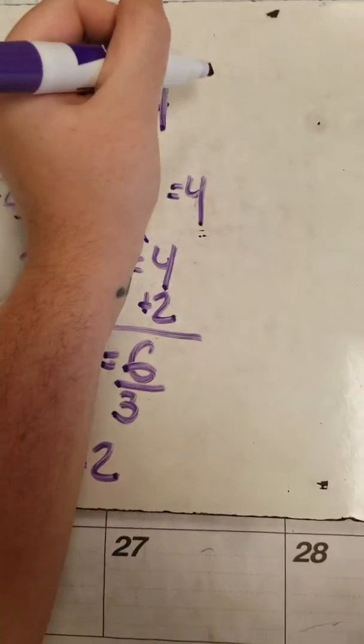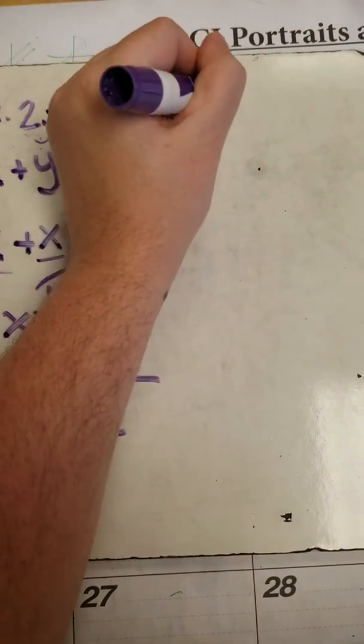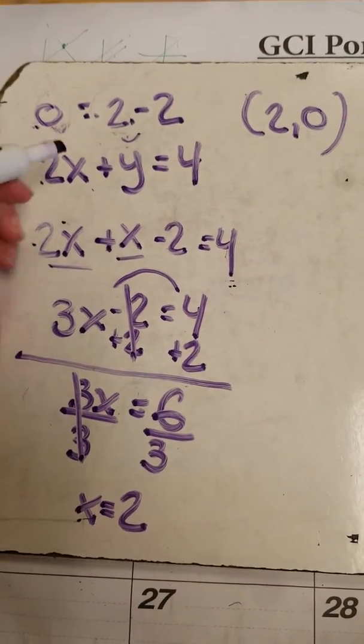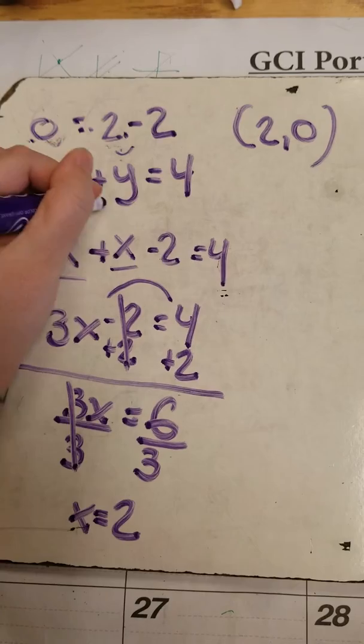The coordinates I should be working with are (2, 0). Let's see if that works. 2 times 2 is 4, and 4 plus 0 is 4.